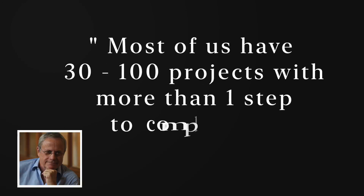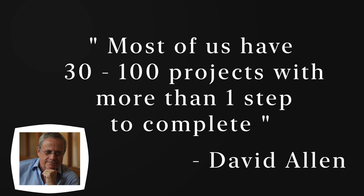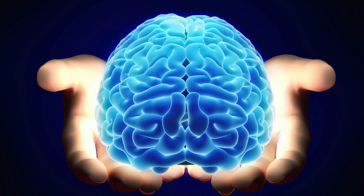Most of us have between 30 and 100 projects — things that take more than one step to complete. So there's always more to do than what you can do at any given moment. This compels you to look at a system to manage the chaos. GTD helps you build a second brain to take care of all the mundane stuff, while your actual brain can be used for more creative pursuits.